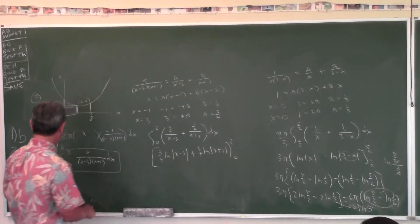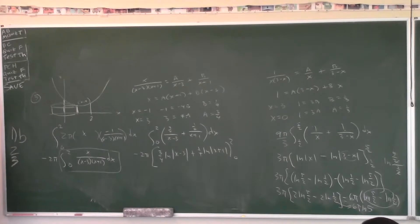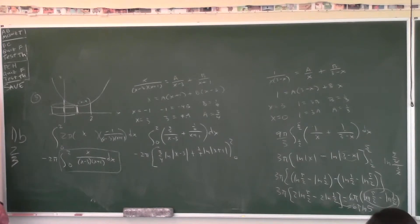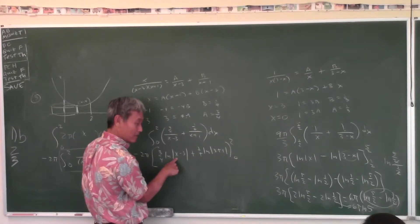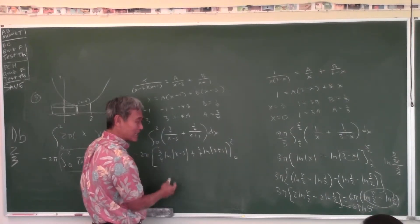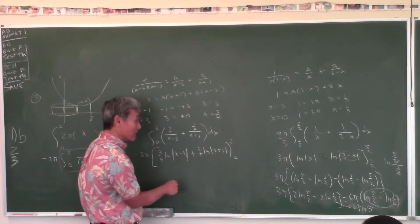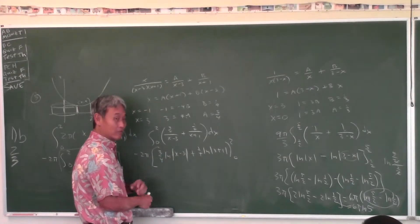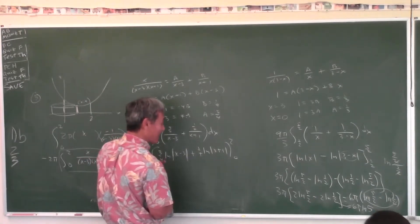The antiderivative is: (3/4)·ln|X minus 3| plus (1/4)·ln|X plus 1|, from 0 to 2. And don't forget to multiply by the negative 2π. You need absolute values: if you plug in X equals 2 without them, you get ln(negative 1), which is undefined. With absolute values, ln(1) equals 0 — that's why you need them.